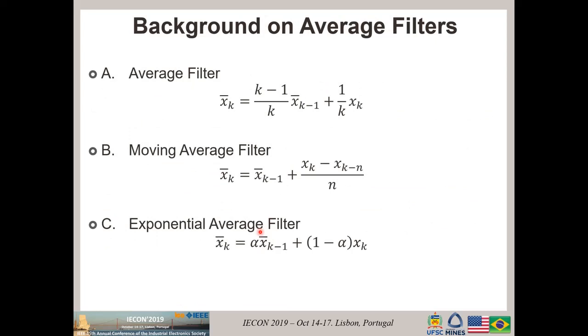A short background on average filters. We can find three types of average filters. The average filter, which is just the computation of an average among a set of values. Then we have the moving average filter, which does not compute the average of all values, but just the most recent. Let's suppose the last 100 values are computed, and if these values are updated all the time, they are always computing only the last 100 or 50, depending on the value of N.